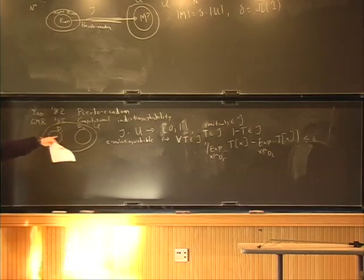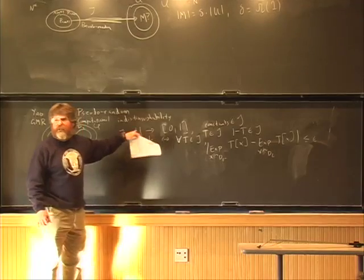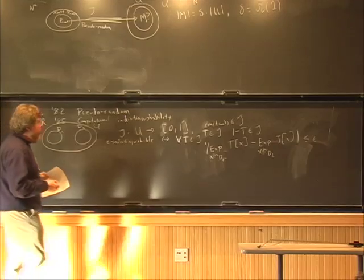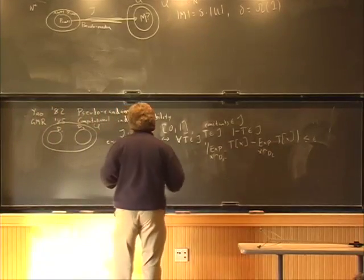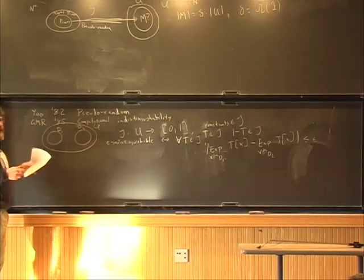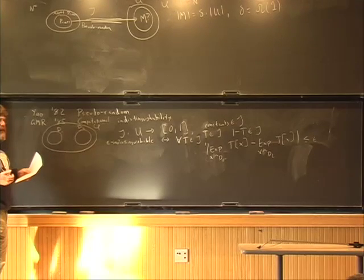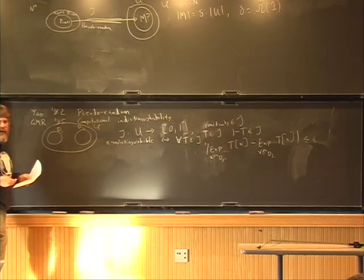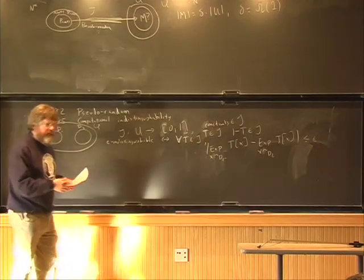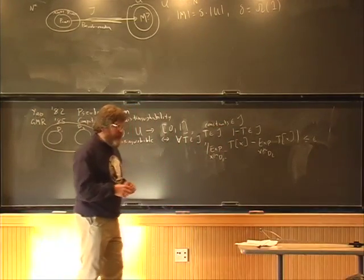That provides a concrete notion of what it means for two sets to look alike. Something is pseudo-random if it's indistinguishable from the uniform distribution on the underlying universe. Most of the time I'm going to assume we're dealing with sets, but pretty much everything I'm saying is equally valid for more general distributions.